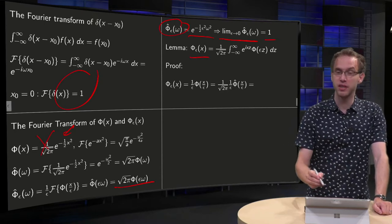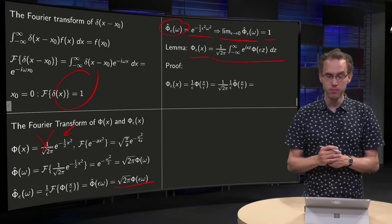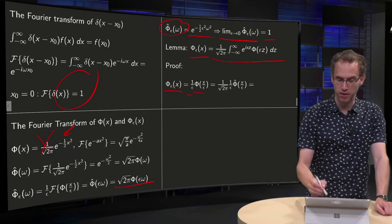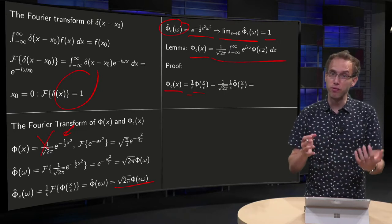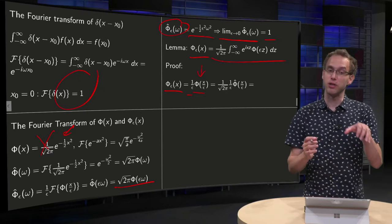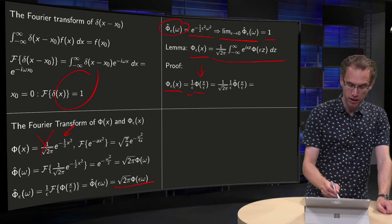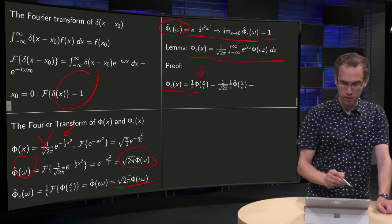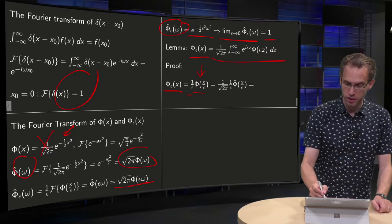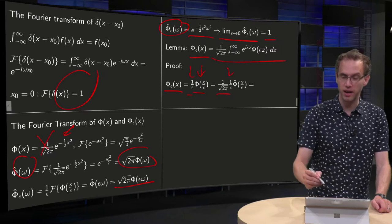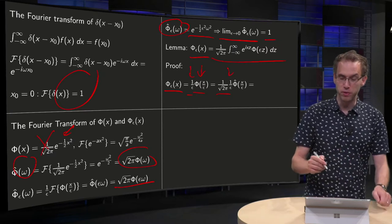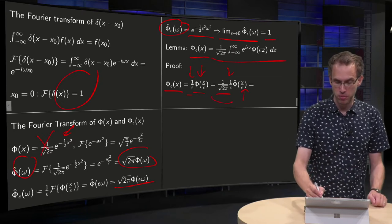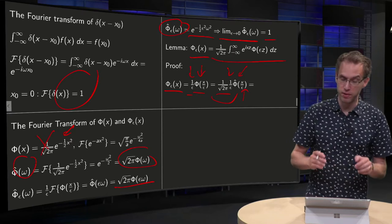We want to prove the following lemma: phi_epsilon of x equals a particular integral expression. First we use the definition phi_epsilon of x equals one over epsilon times phi of x over epsilon. Then we convert phi of something into its Fourier transform using the inversion formula, so phi_epsilon of x is equal to some constant times its Fourier transform evaluated at x over epsilon.